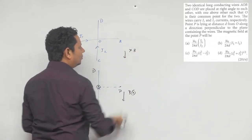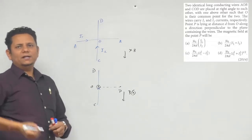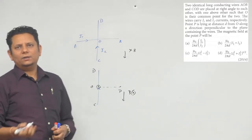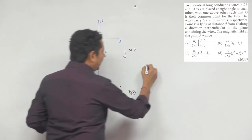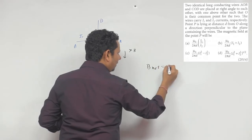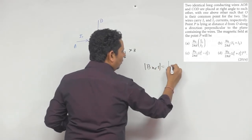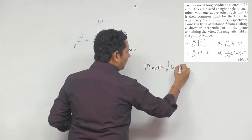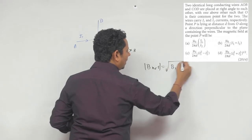You can see that the magnetic fields from the two wires are perpendicular to each other. So the magnitude of the resultant magnetic field is √(B1² + B2²).